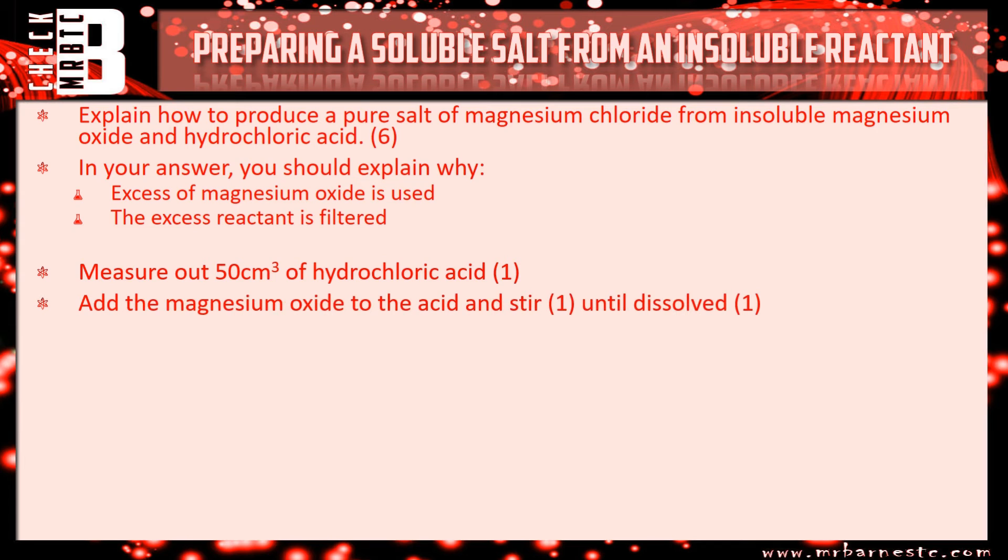Your second step is to add some magnesium oxide to the acid and stir until it's dissolved. So there's two marking points there. You need to keep adding that until no more magnesium oxide dissolves, no more disappears, no more reacts. Once that's happened, you know you've reacted all of the hydrochloric acid.